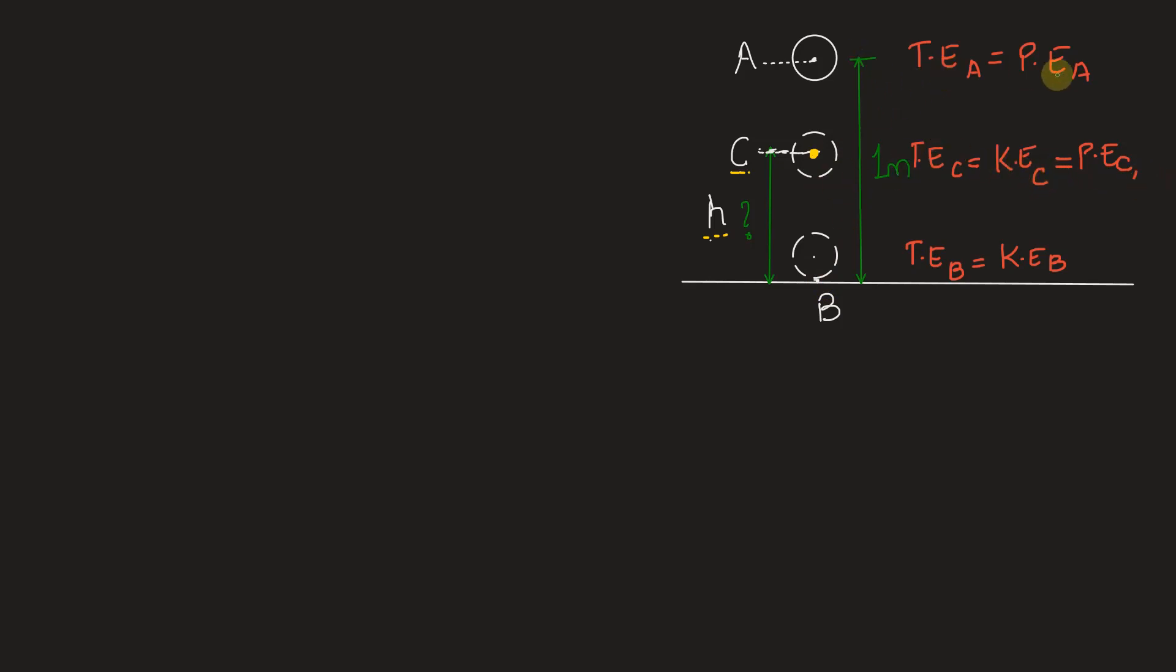So first thing we can equate potential energy at A to kinetic energy at B because from point A to B there is no loss of energy. So first thing total energy at A is equal to total energy at B. Therefore, potential energy at A is equal to kinetic energy at B.